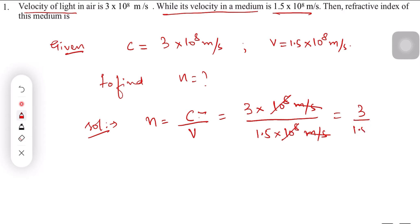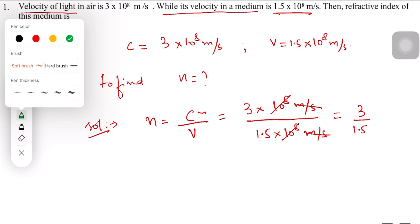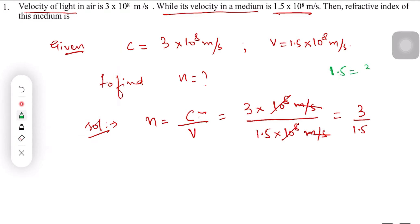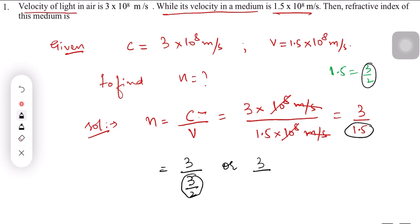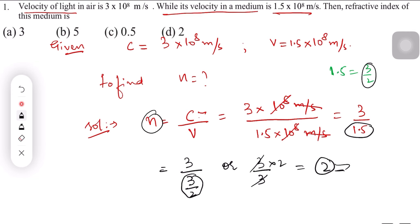So what you get is 3 divided by 1.5. I can write 1.5 as 3/2 in fractions, which helps solve it quicker. So 3 divided by 3/2 — taking the reciprocal, 2 goes up and 3 goes down, and the 3s cancel. So the answer is 2. Because it's a refractive index, there is no unit. The answer is 2, which is option D.